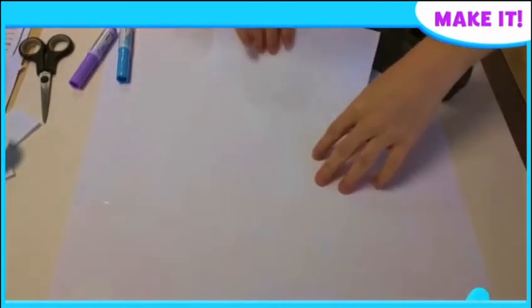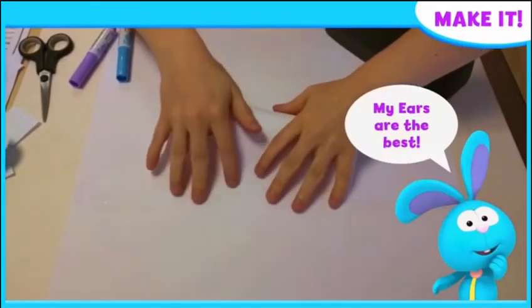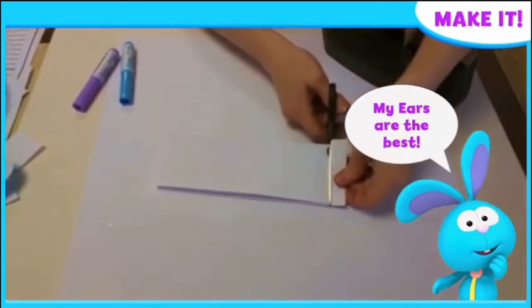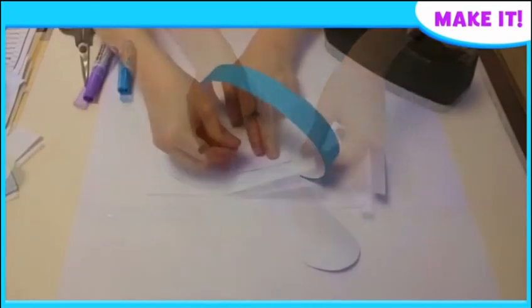Fold the additional sheet of A4 lengthways twice and then cut two strips of paper. Stick the two strips of paper to the back of the ears using sticky tape.